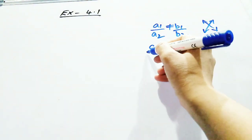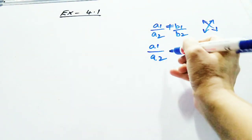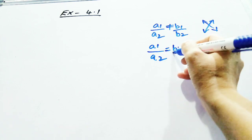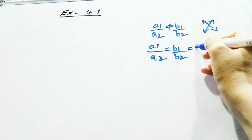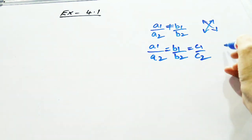If your coefficient a1 upon a2 is equal to b1 upon b2 is equal to c1 upon c2, then it is a coincident.